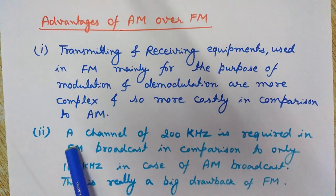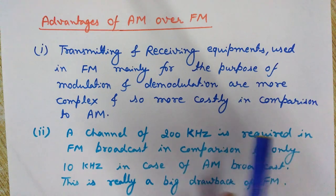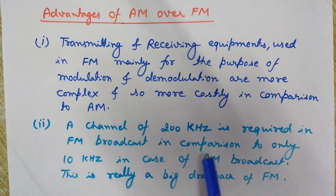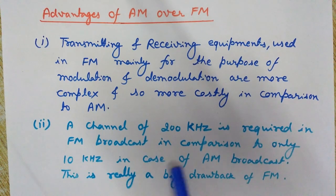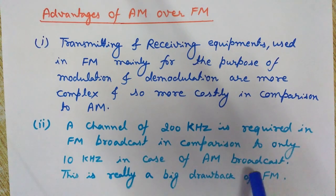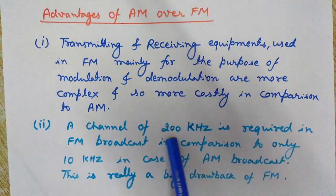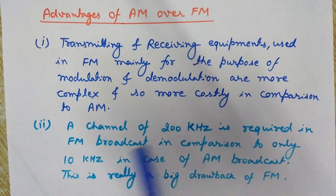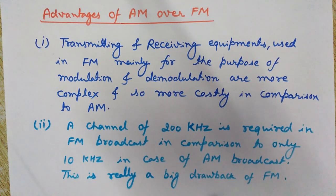The second disadvantage of FM is that a channel of 200 kilohertz is required for FM broadcast, compared to only 10 kilohertz for AM broadcast. There is a large difference between 10 kHz and 200 kHz, meaning FM wastes considerably more channel bandwidth. This is a significant drawback of FM broadcasting.